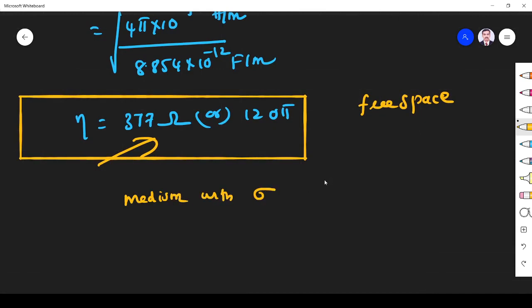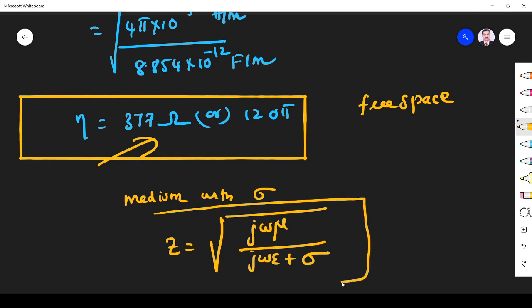For a medium with conductivity sigma, the intrinsic impedance can be defined as z equals j omega mu divided by j omega epsilon plus sigma. This is for a medium with conductivity.